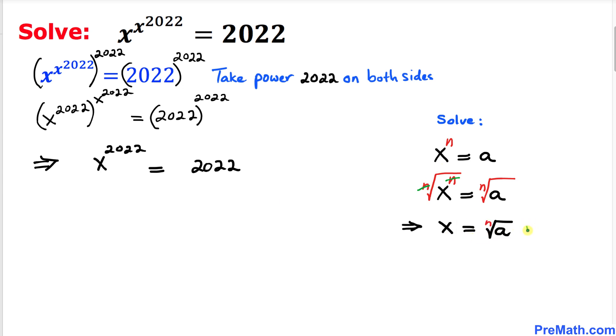This could also be written as x equals a power 1 over n. This one is called the radical notation and this one is called exponential notation.